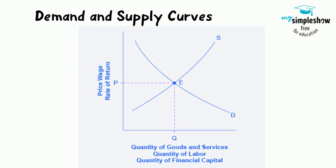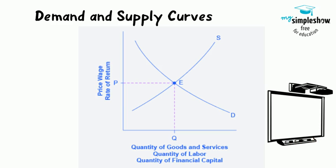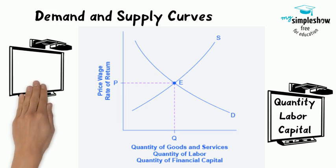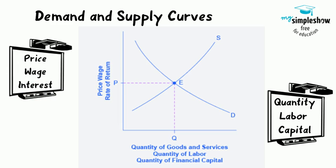Demand and Supply Curves. The figure displays a generic demand and supply curve. The horizontal axis shows the different measures of quantity: a quantity of a good or service, a quantity of labor for a given job, or a quantity of financial capital. The vertical axis shows a measure of price: the price of a good or service, the wage in the labor market, or the rate of return, like the interest rate, in the financial market.